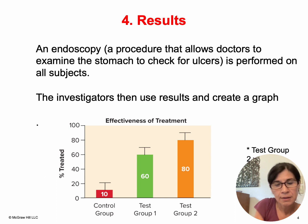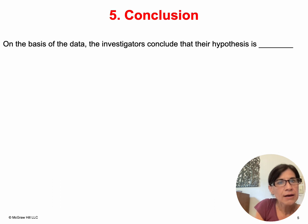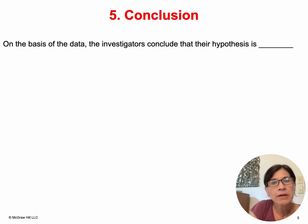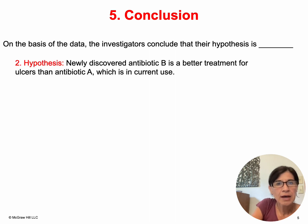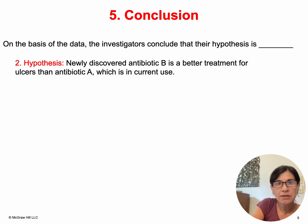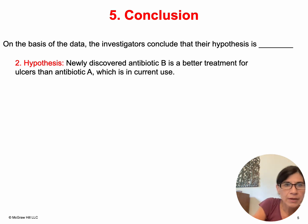So what can we say now? These results allow us to make a conclusion. On the basis of the data collected, the investigators conclude that their hypothesis — that the newly discovered antibiotic B is better at treating ulcers than antibiotic A — is supported.